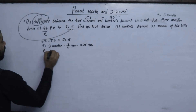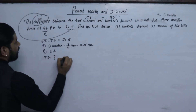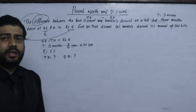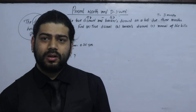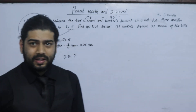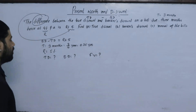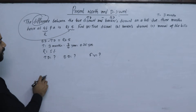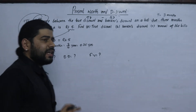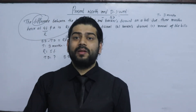Rate is 4% per annum. True discount and banker's discount are related. In the previous class, you can find the difference between banker's discount and true discount — that is, you can find the banker's gain.